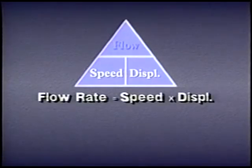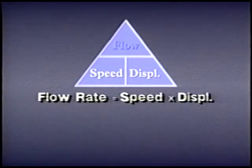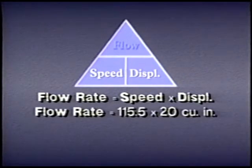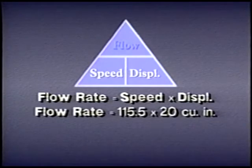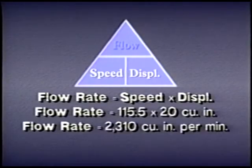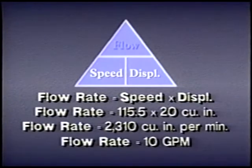We can also calculate the flow a motor requires to maintain a certain speed if we know the displacement. For example, a 20 cubic inch motor operating at 115.5 rpm will require a flow of 2,310 cubic inches per minute — that's 10 gallons per minute.